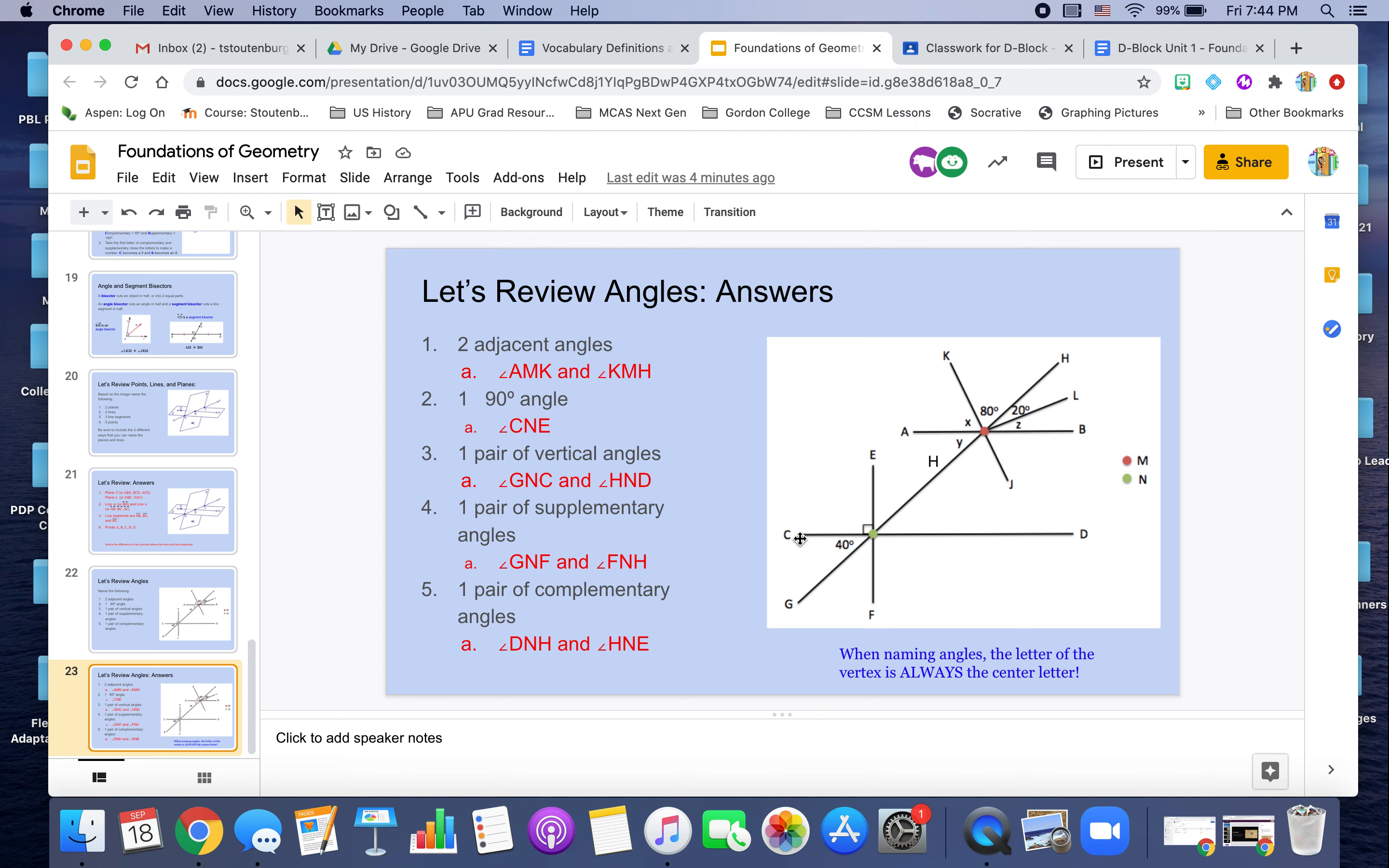Okay. Our 90 degree angle, remember, is indicated by our little box here. So that angle we would name CNE. Remember N is a little green dot.